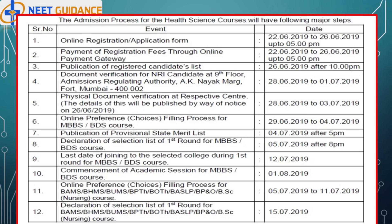Document verification for NRI candidates: 28th June 2019 to 1st July 2019. Physical document verification at respective centers: 28th June 2019 to 3rd July 2019. Online preference choices filling for MBBS and BDS: 29th June 2019 to 4th July 2019. Publication of provisional state merit list: 4th July 2019 after 5 PM. Declaration of selection list for first round for MBBS and BDS: 5th July 2019 after 8 PM. Last date of joining for first round: 12th July 2019. Commencement of academic session for MBBS and BDS: 1st August 2019.